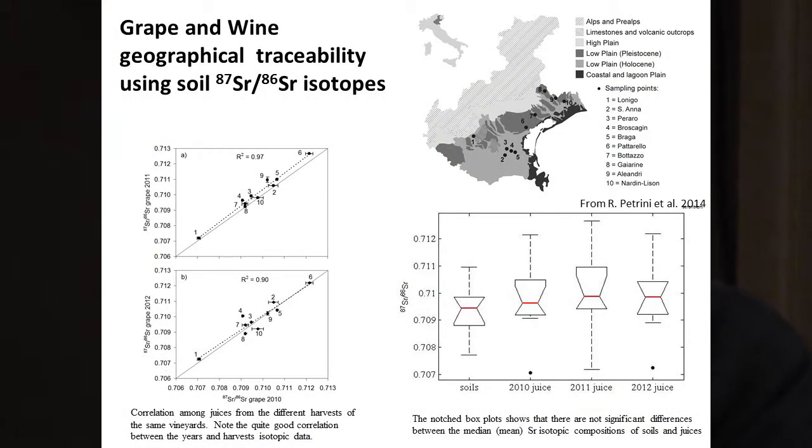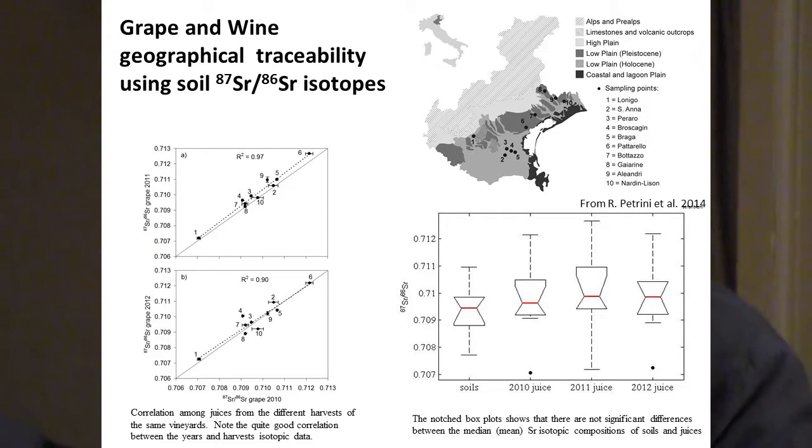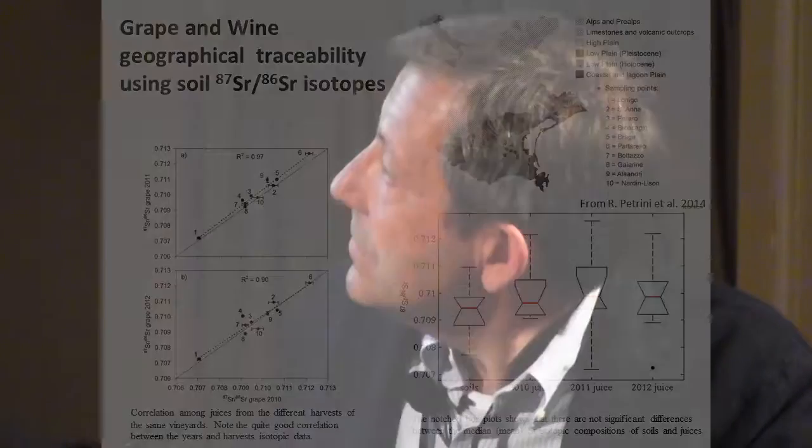It is the same when looking at the ratio between strontium isotopes. There are three different years — 2011, 2012 and 2010 — and the characterization of the soil is always the same. We are able to differentiate the different origins of the soil. And also the wine: the ratio of these isotopes is always the same in the soil and in the wine. So geology gives us the opportunity to have traceability of our wine and our products.